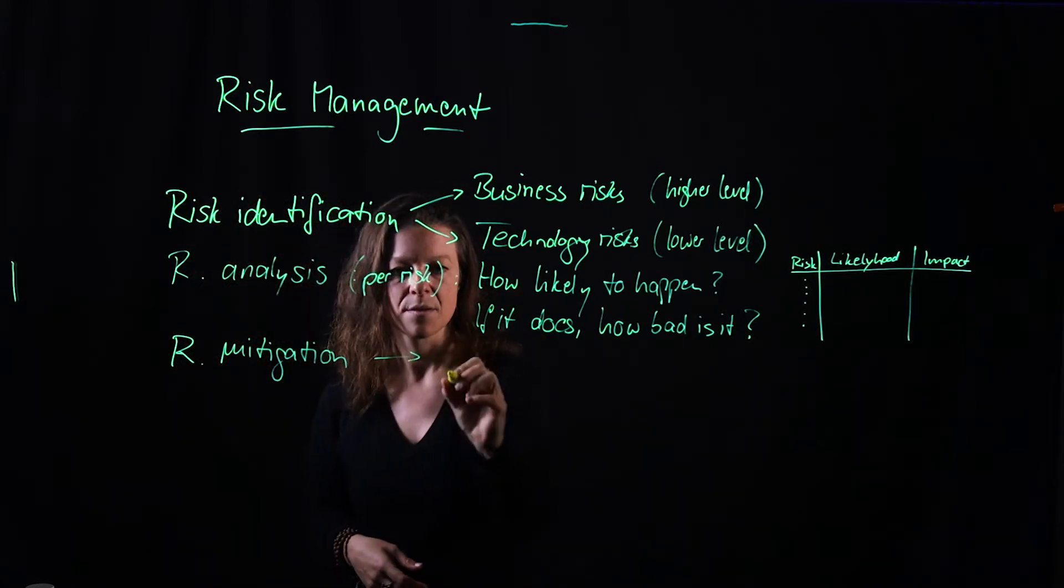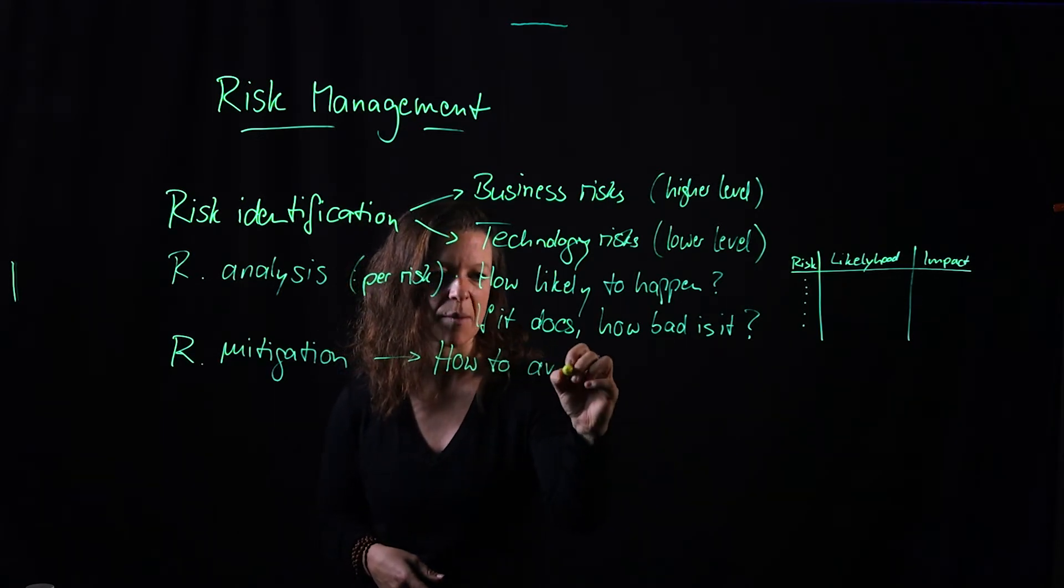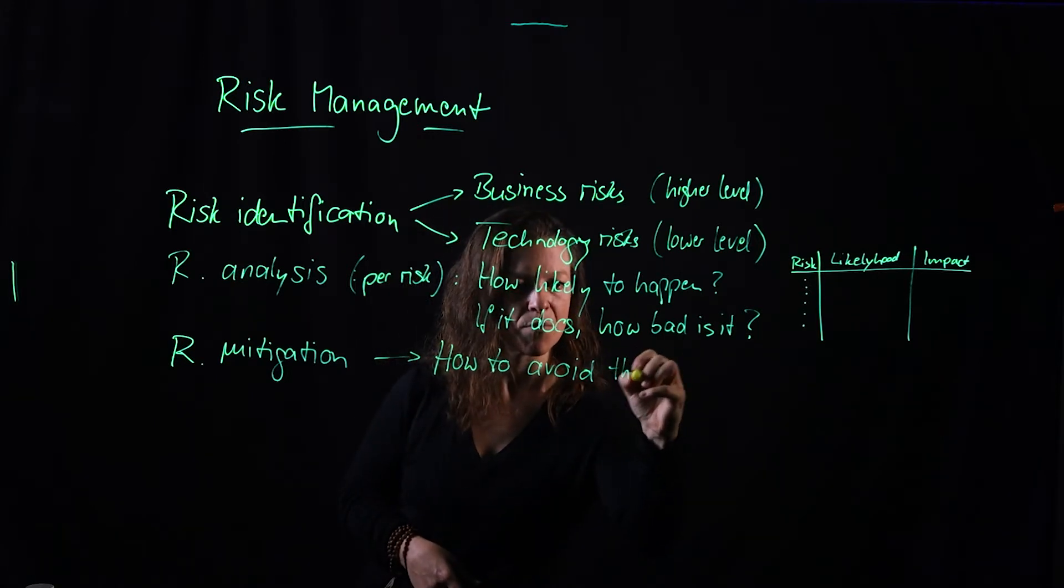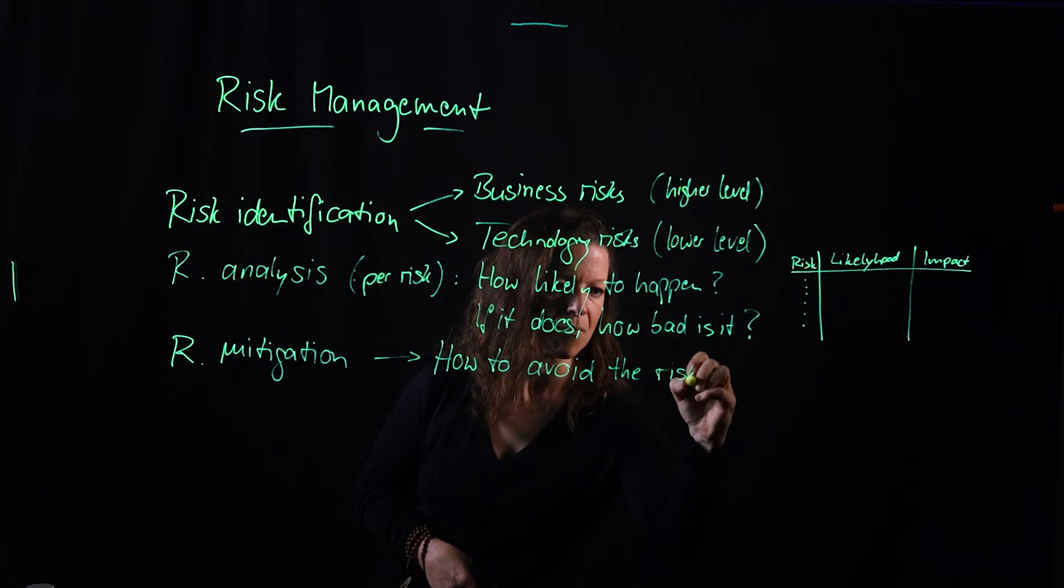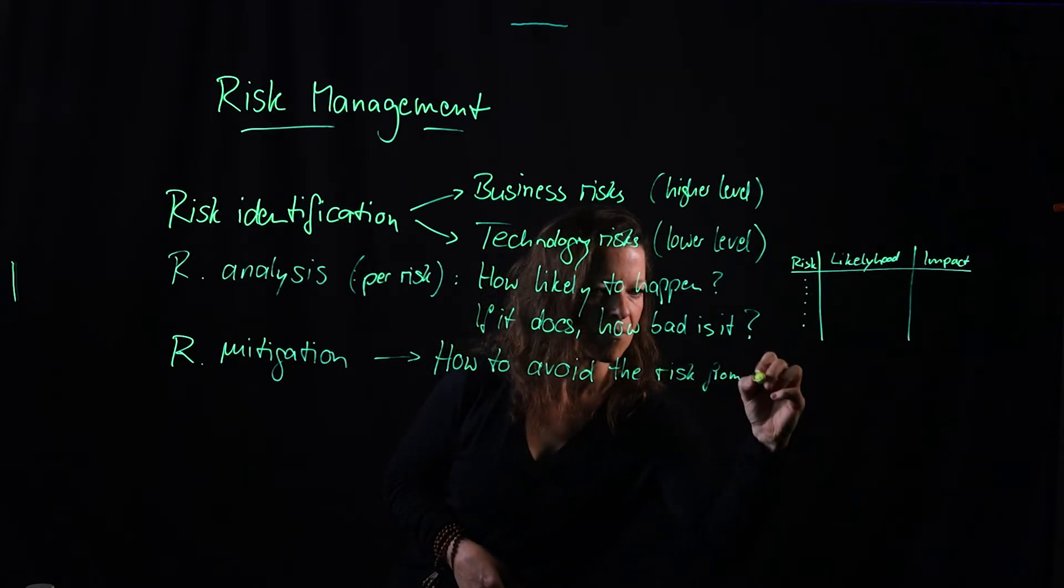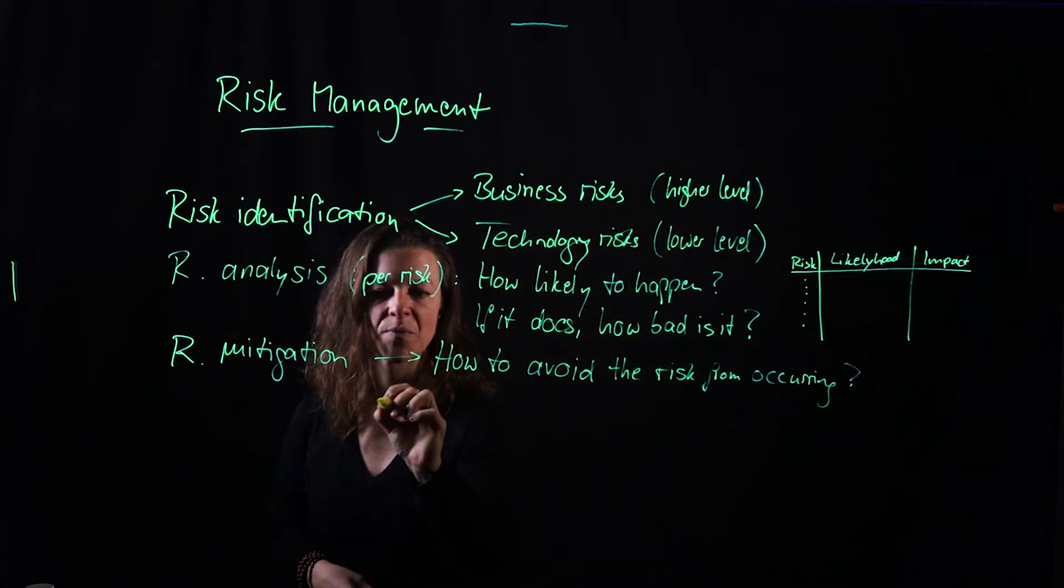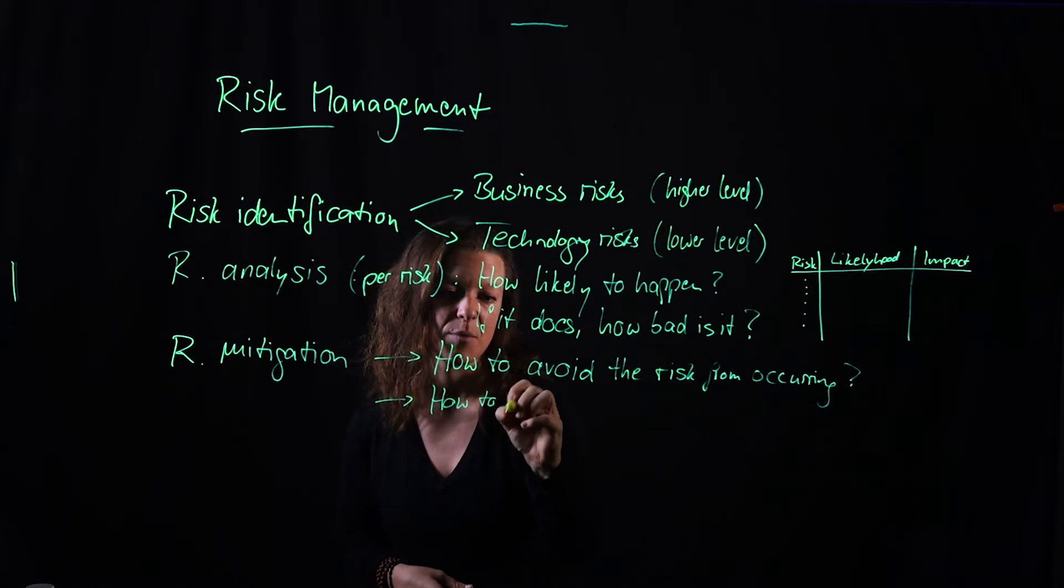And that means two things. The first one is how to avoid it from happening in the first place, how to prevent it from happening in the first place. And the second one is how to mitigate in case it does happen.